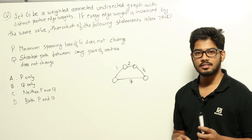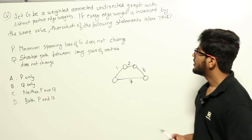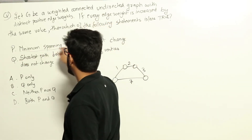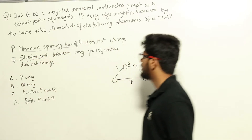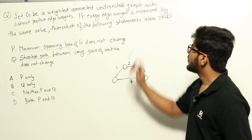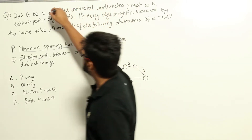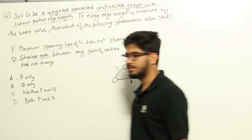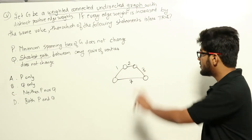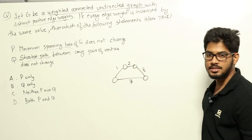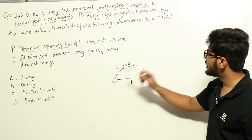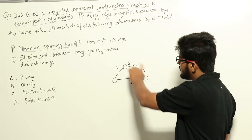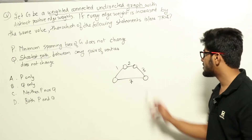This is a question from data structures topic regarding graphs. Particularly, they are asking us about minimum spanning trees and shortest path between any two vertices. We have been given a weighted, connected, undirected graph with distinct positive edge weights. If you look at this graph, this addresses all the conditions given in the question — it is weighted, each edge has its own weight, it is connected, undirected, with distinct positive edge weights.